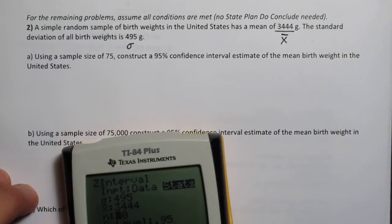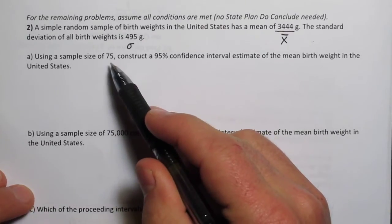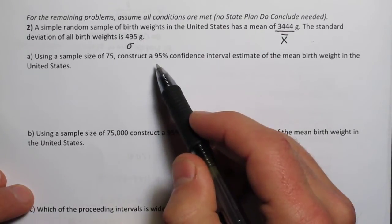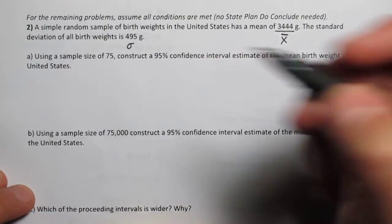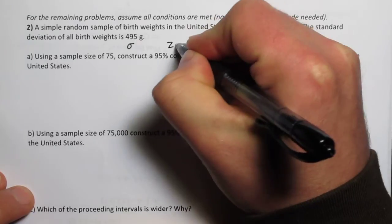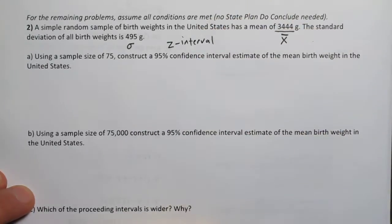So on the first one here we're going to use a sample size of 75 and construct a 95% confidence interval. Now because sigma is known, the population standard deviation, we're going to use z intervals in this case.